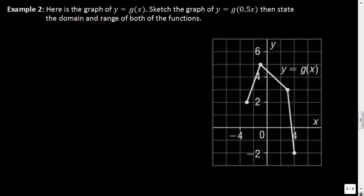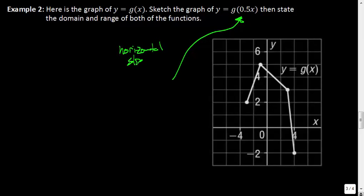Example 2 states: here's the graph of y = g(x). Sketch the graph of y = g(0.5x), then state the domain and range of both functions. So what do we know about this 0.5? We can say that 0.5 is going to produce a horizontal stretch. We'll take the reciprocal of ½, so it would be a horizontal stretch of factor 2, because 1 ÷ 0.5 = 2.